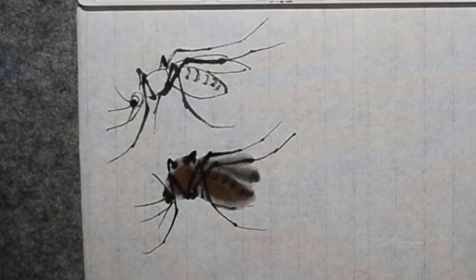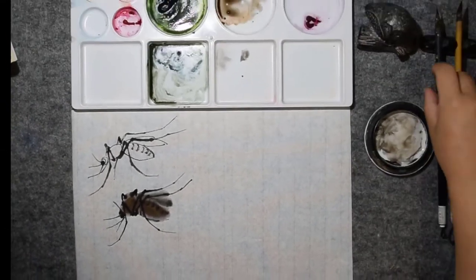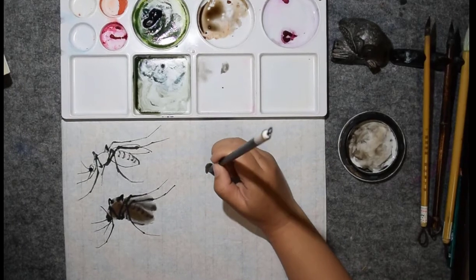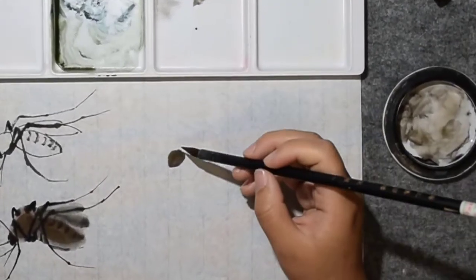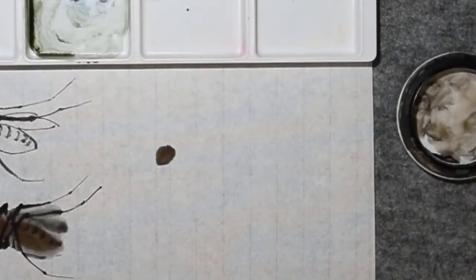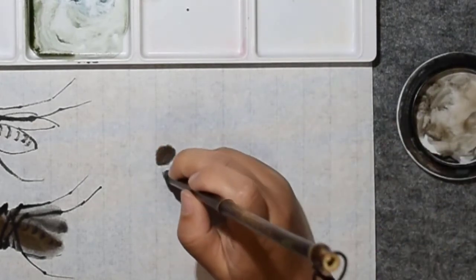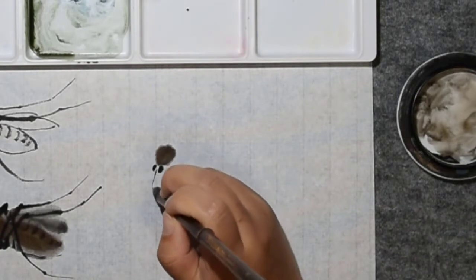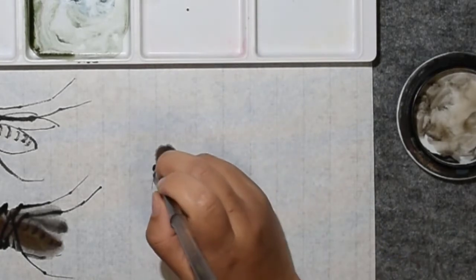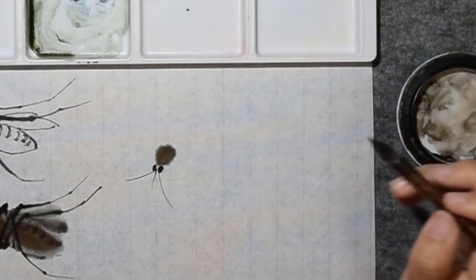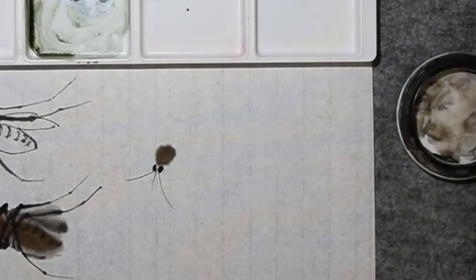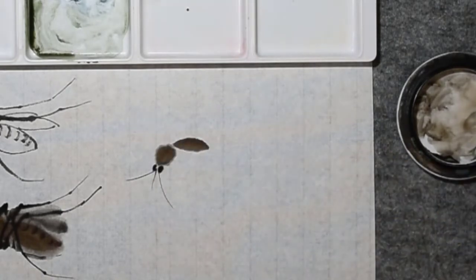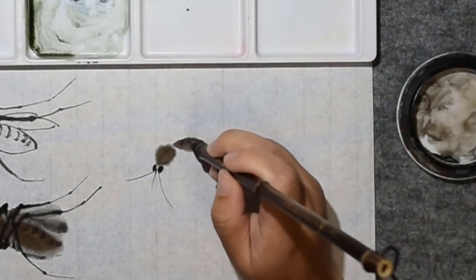Let's draw another one. Thorax first, and the eyes here, antenna here. This is the body, this is the body, this is the body, some pattern.